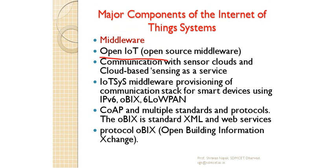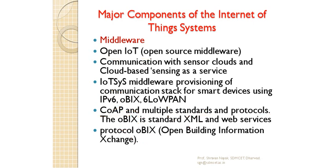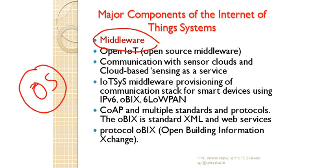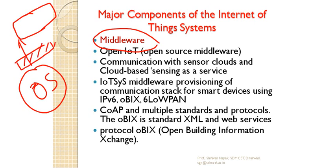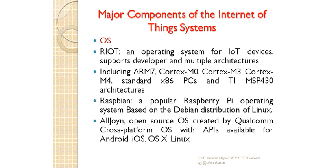You have one called OpenIoT - basically for communication with sensor clouds and cloud-based sensing as a service. There are things like IPv6, 6LoWPAN, CoAP and multiple standard protocols, XML, OBIX, open building information cache - all these come under the middleware. Basically, if some function is not possible for your OS to carry out because of limitations, so that your end application is fully realized, then you make use of middleware which takes care of all these tasks.